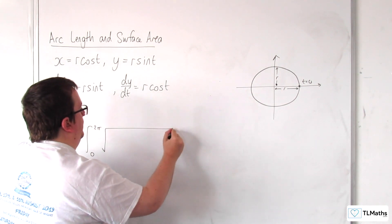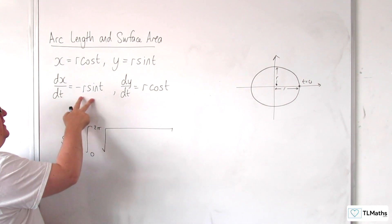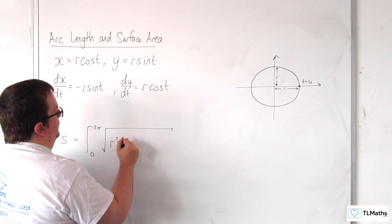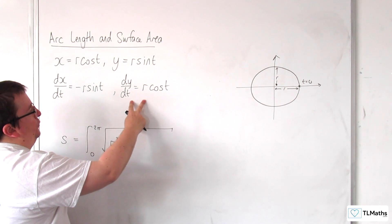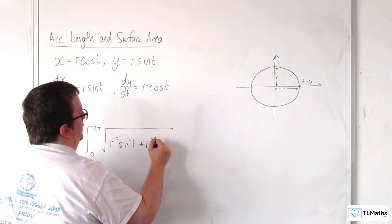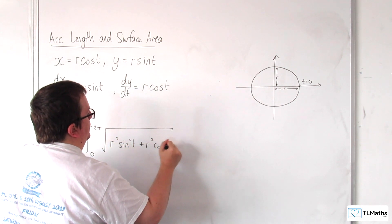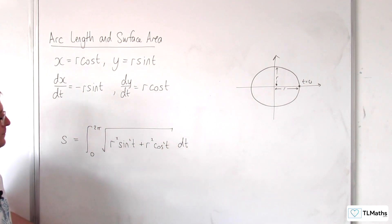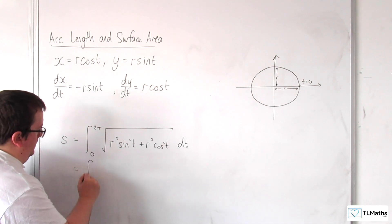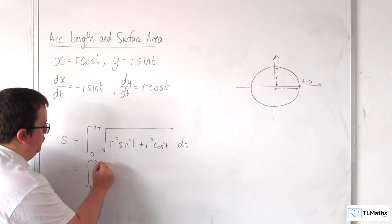So we're integrating between 0 and 2π, the square root of dx by dt all squared. So that would be r squared sine squared t, and dy by dt all squared. So plus r squared cosine squared t dt. So let's pop in the integral there.